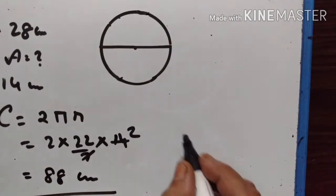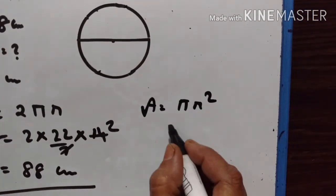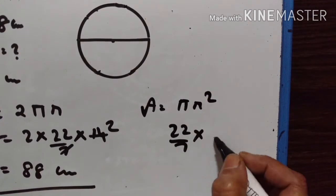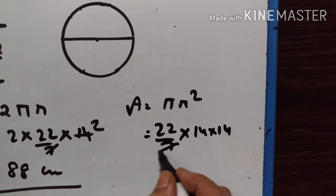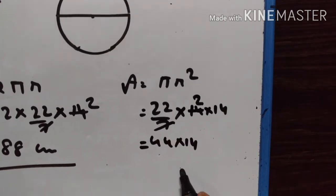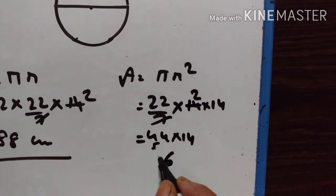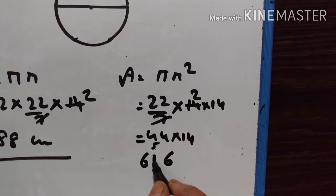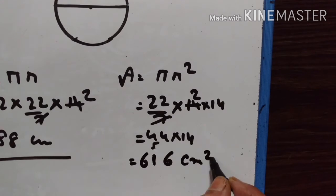What is the area now? Area is equal to πr². So (22/7) × 14 × 14. 44 × 14: 14 × 4 = 56, 56 + 5 = 61 — so area is equal to 616 square centimeters.